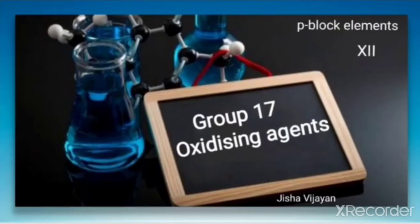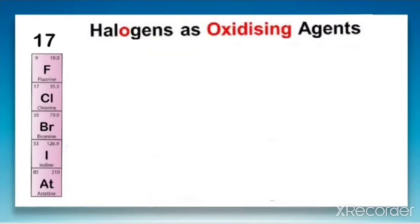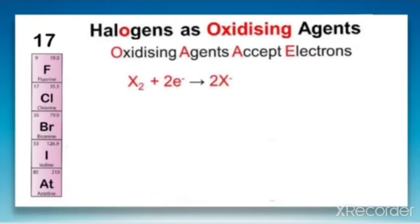Hello students. Group 17 elements, that is halogens, act as oxidizing agents. Let us discuss the property of group 17 elements acting as oxidizing agents. All halogens have a tendency to accept electrons, therefore they act as good oxidizing agents because of the acceptance of electrons.